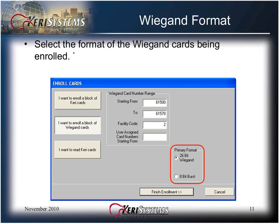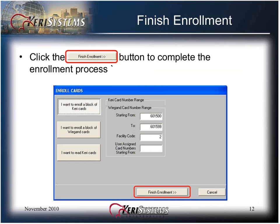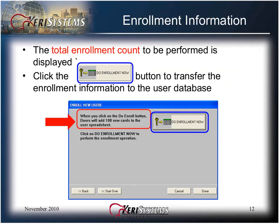If you are enrolling Wiegand credentials, you need to select the format of the Wiegand cards being enrolled. This field does not appear when you are enrolling Cary cards. Click the Finish Enrollment button to complete the enrollment process. All the information necessary to perform block enrollment has now been collected. In the next window, the total enrollment count to be performed is displayed. Before continuing with the enrollment process, verify the total enrollment count. This is your last chance to easily correct any enrollment errors.